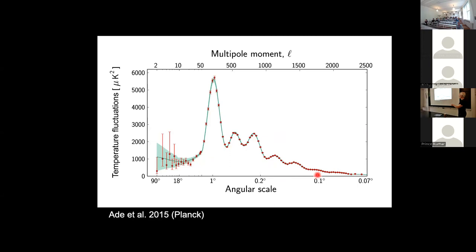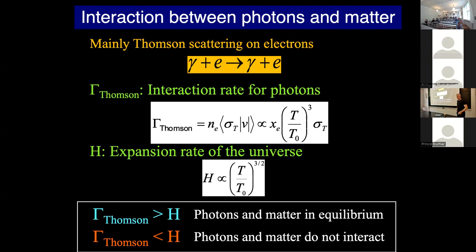These peaks come from baryon-photon acoustic oscillations in the early universe. To understand how neutrinos impact this, we must first understand how photons arrive at the CMB spectrum. By far the main scattering mechanism is Thomson scattering, which is iso-energetic at these small energies — energy-conserving but momentum-changing. So it can mediate pressure waves, but cannot change the shape of the photon distribution because you cannot change photon energy.